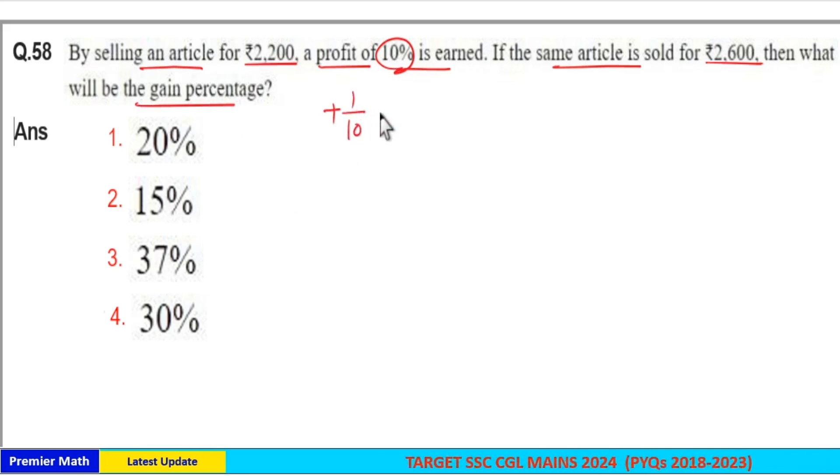Which is 1 by 10. So plus 1 by 10 means if 10 parts is the cost price, then 10 plus 1 equals 11 parts is the selling price. Here, 11 parts is given as 2200 in the question, which is the selling price.